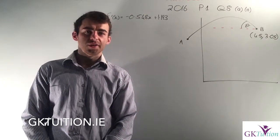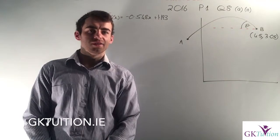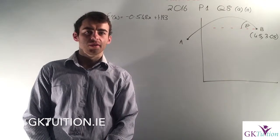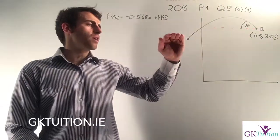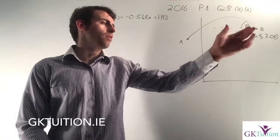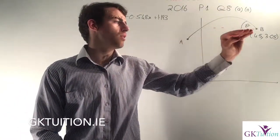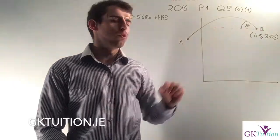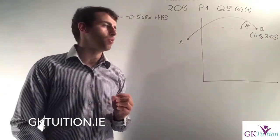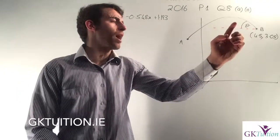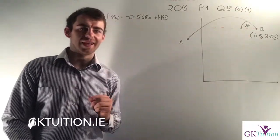For Part A2 of this question, we're asked to find the acute angle to the horizontal with which the ball enters the basket. On my diagram I've drawn a horizontal line through coordinate B — where the basketball hoop is — and the acute angle with which the ball enters the basket is labelled as θ.